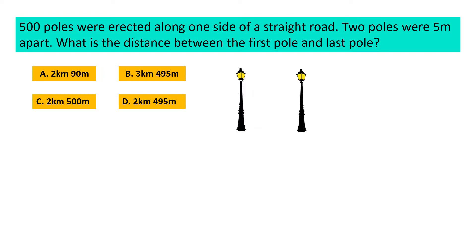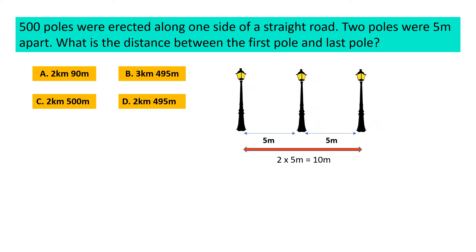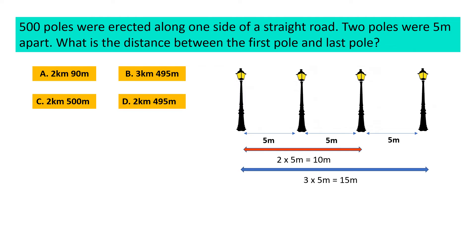Suppose this is the first pole and this is the second pole. Two poles were 5 meter apart, so the distance between the first pole and second pole is 5 meter. If this is the third pole, the distance between first and third pole is 5 plus 5, which is 10 meter — that is 2 times 5 meter. If this is the fourth pole, the distance is 3 times 5 meter, which equals 15 meter. It is to be noted that the distance between first and last pole equals the number of poles minus 1, multiplied by 5 meter.